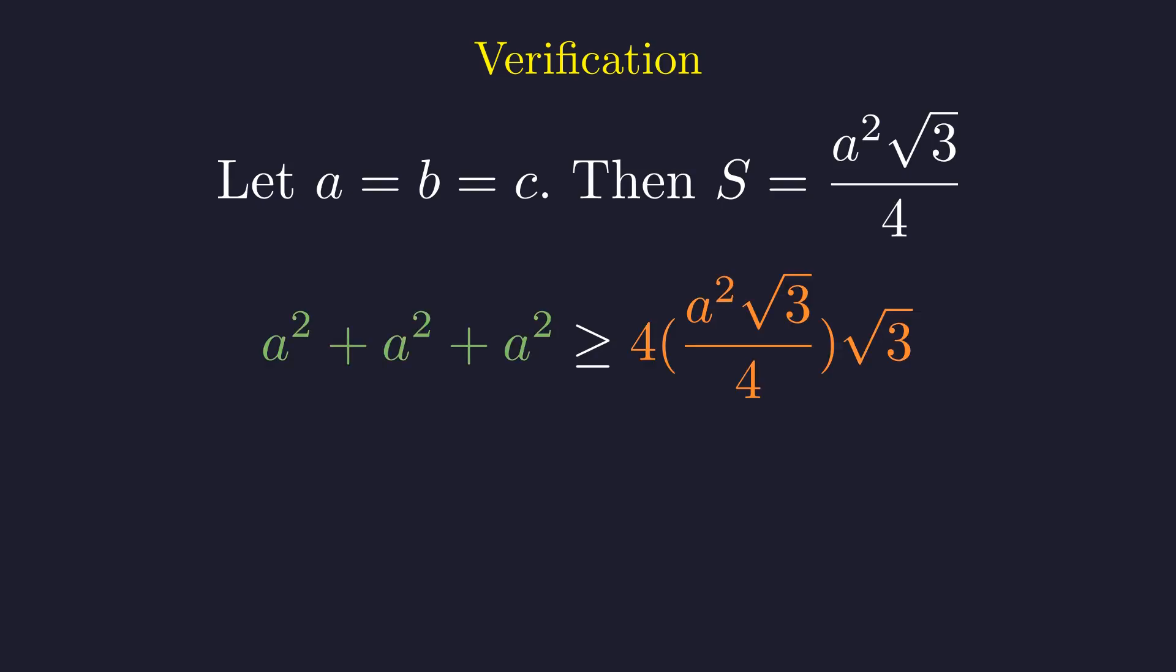Plugging these values into our original inequality gives us this expression. Now, let's clean up both sides and see if we get the equality we expect. The left side gives us 3A squared. On the right, those 4s cancel out nicely.